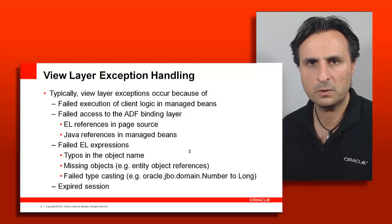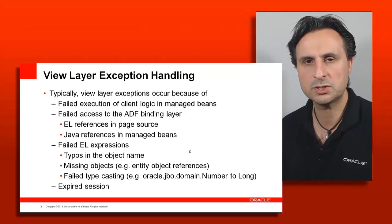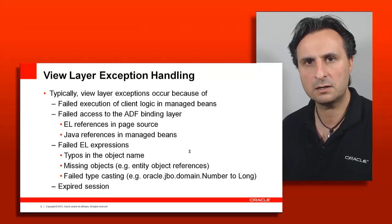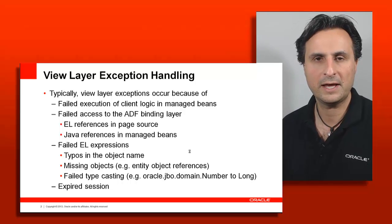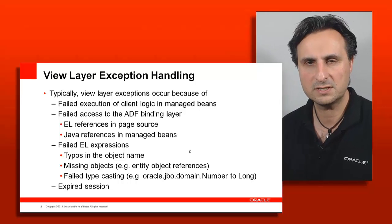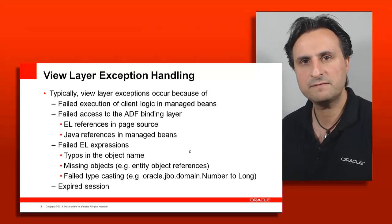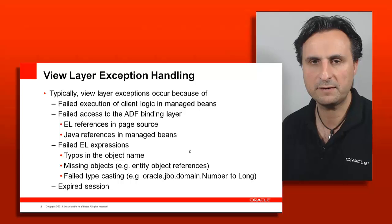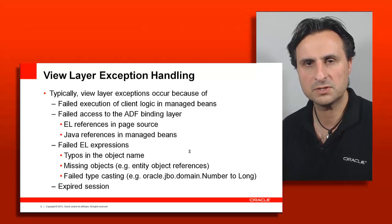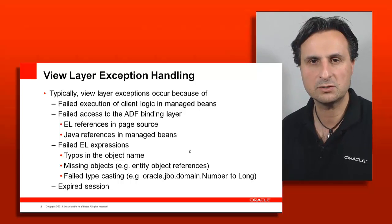Other options where things go wrong is where you have expression language that addresses an object that doesn't exist. Typical candidates are those where you try to address objects that are out of scope, like trying to use expression language to access the binding that belongs to a parent task flow and not to the current task flow you're in. It's a very common mistake — people try to reach out of a bounded task flow to access objects that exist on the parent level, which by definition is not possible, so it will just reach into empty air.